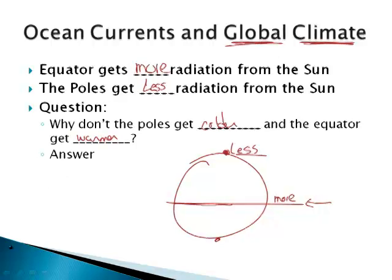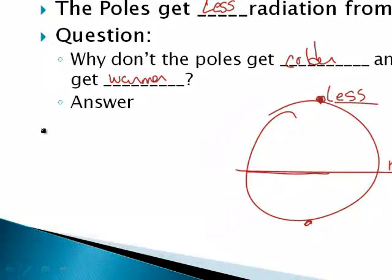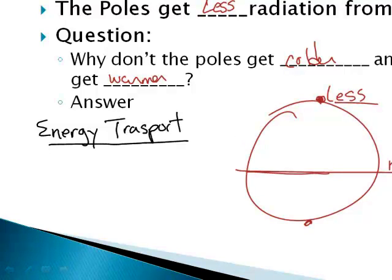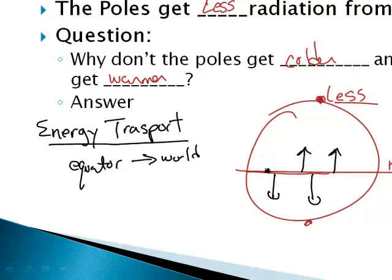That's a good question. The answer has to do with something that scientists call energy transfer or energy transport. Basically, what we're saying is that the energy - remember things always flow from hot to cold - the energy is transported from the equator to the rest of the world. It's going to go from the equator north and from the equator south.